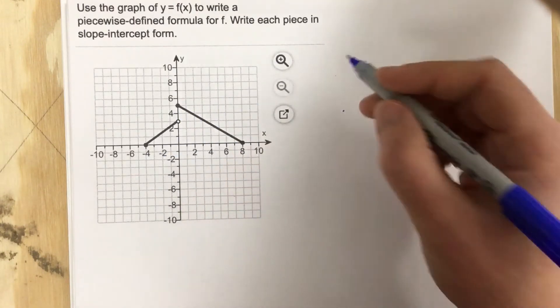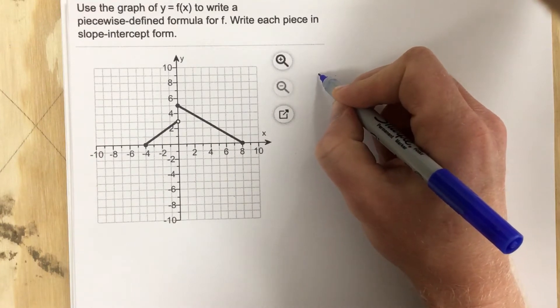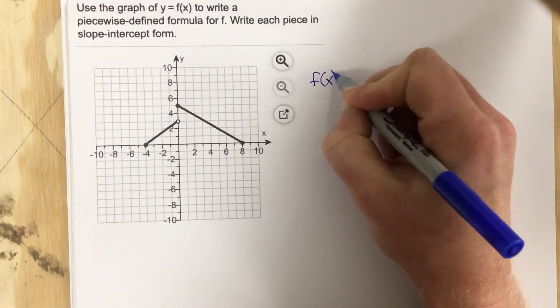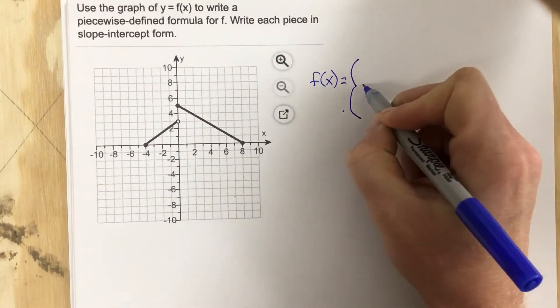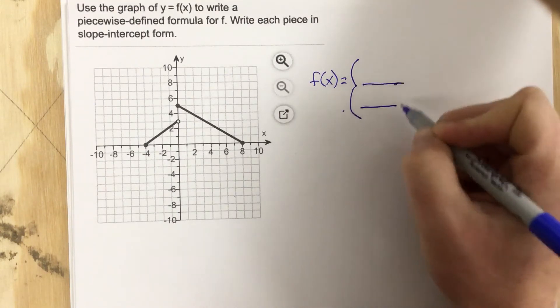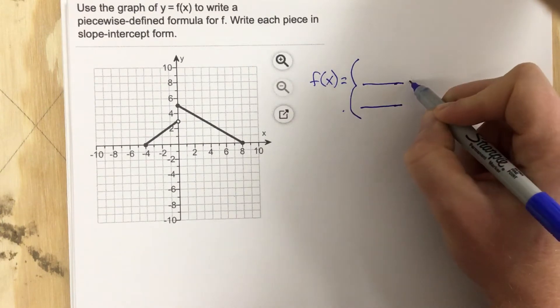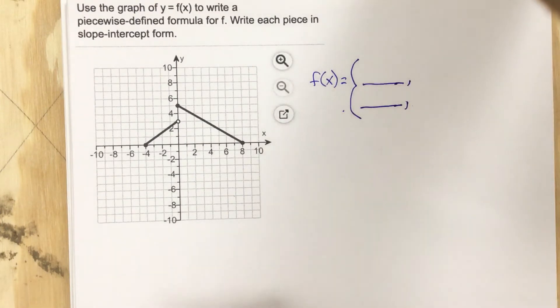And the first thing we want to do is we want to say f of x equals, because we've got two pieces, we're going to have two equations here. So we're going to put two lines there for the equations, and we want to define the domains for each.